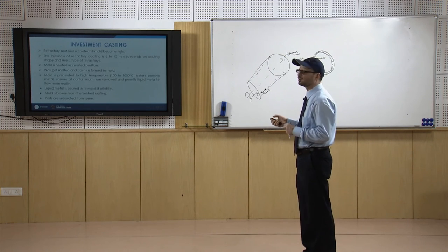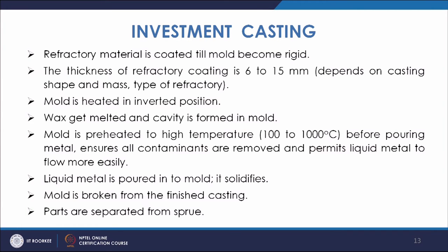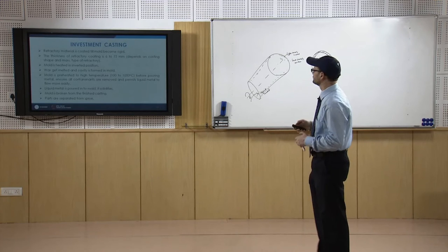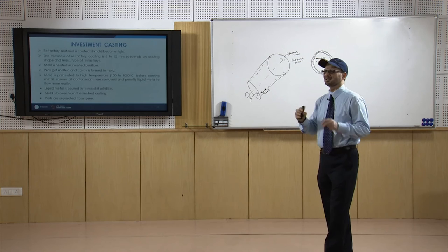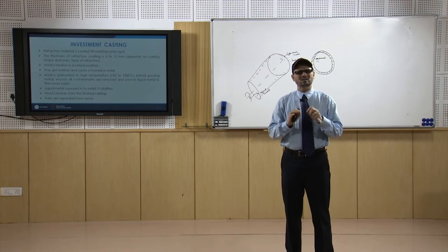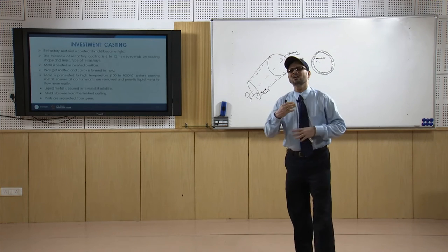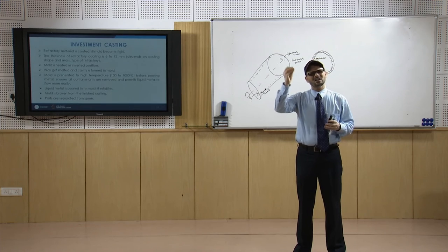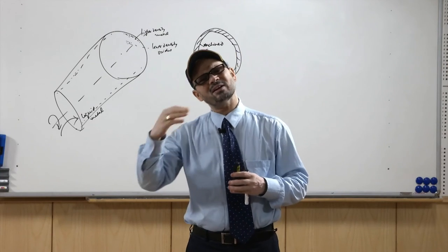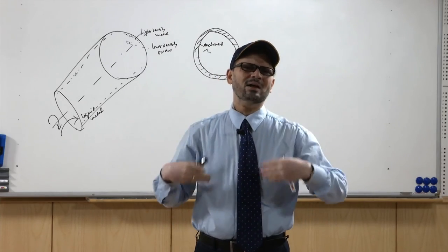The mould is heated in the inverted position so all the wax comes out, then it is further preheated or fired up to 1000 degrees C to ensure all vapor and moisture are removed. At higher temperature, fluidity of liquid metal is higher so finer cavities and finer details can be produced. Then liquid metal is poured, it solidifies, and finally the mould is broken to get the product. Different kinds of wax are used — macrocrystalline, carnauba, and others.